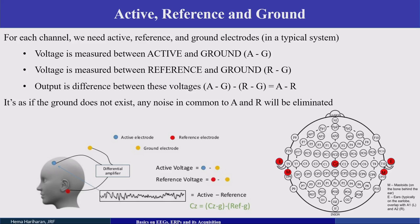The EEG recording is obtained by measuring the voltage between the active and ground electrodes, then the voltage between the reference and ground electrodes. The potential difference between the active and reference gives the EEG recording. The reference and ground are typically placed at the ear lobes or mastoid. Some caps have their own built-in ground and reference positions.